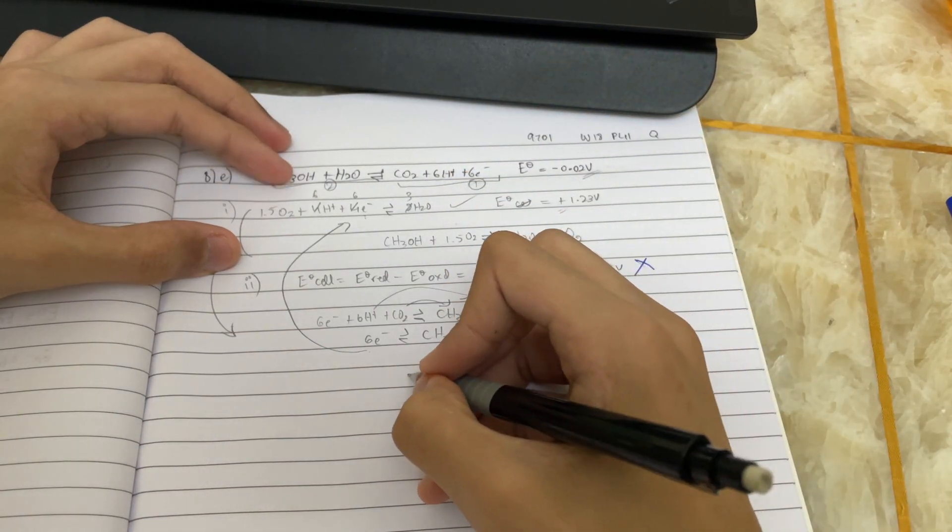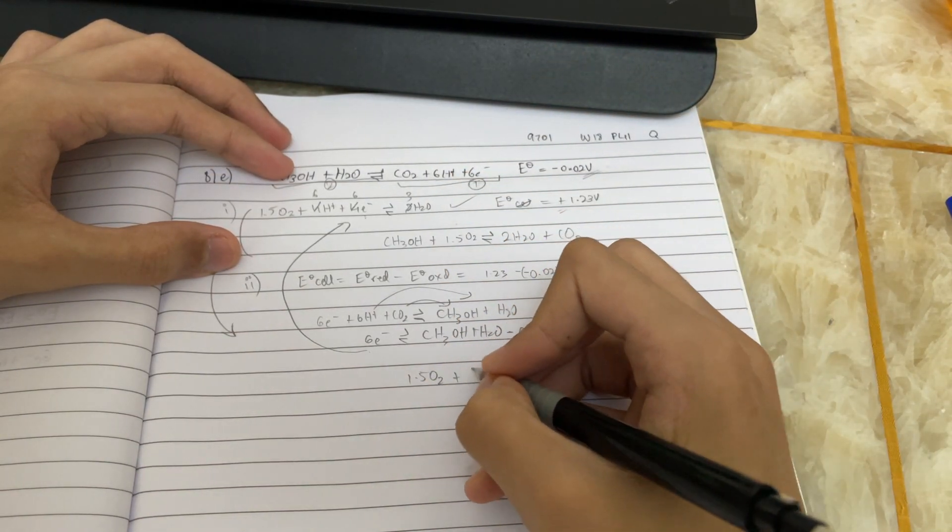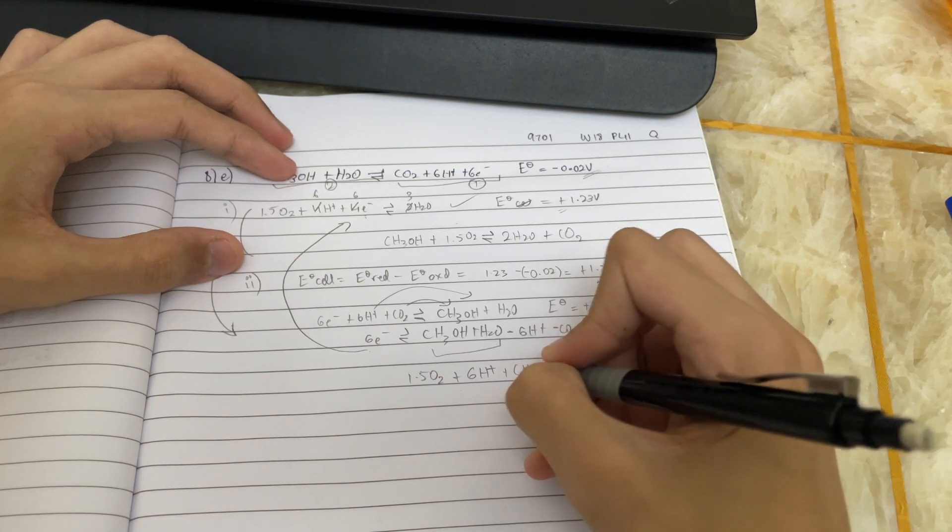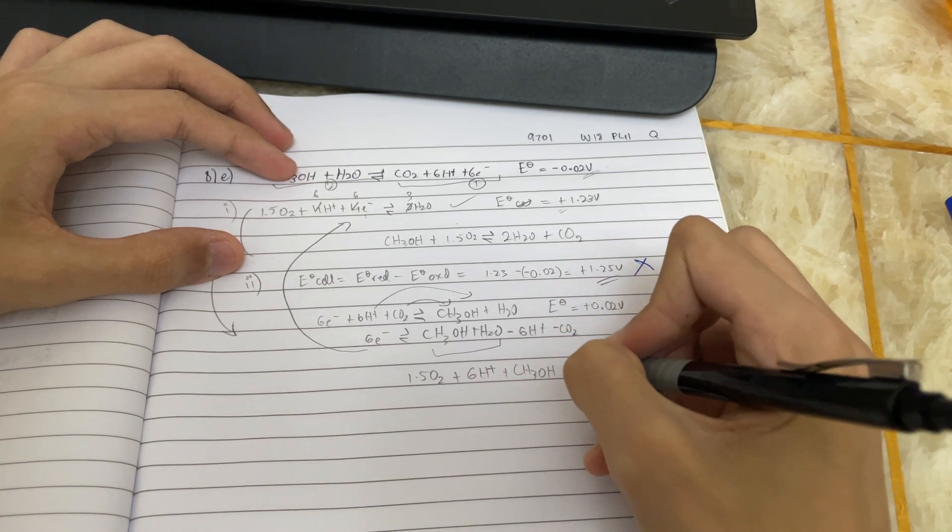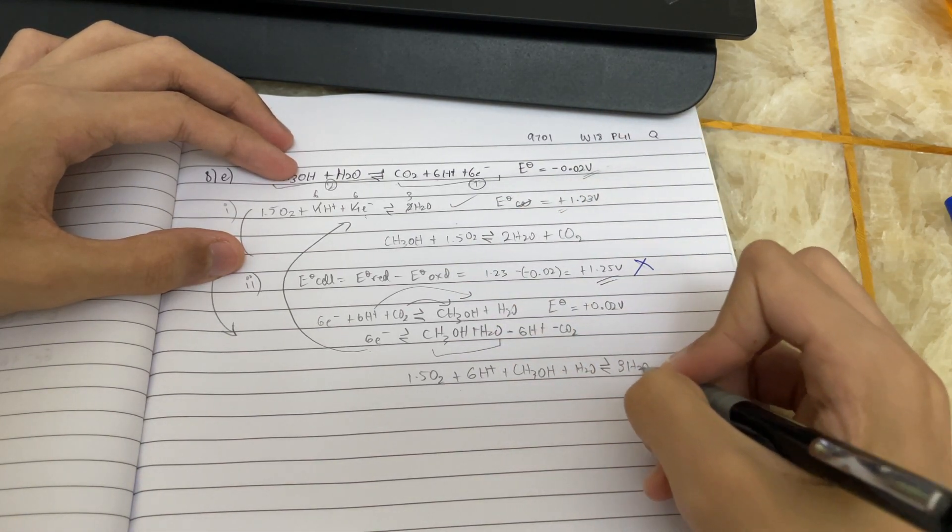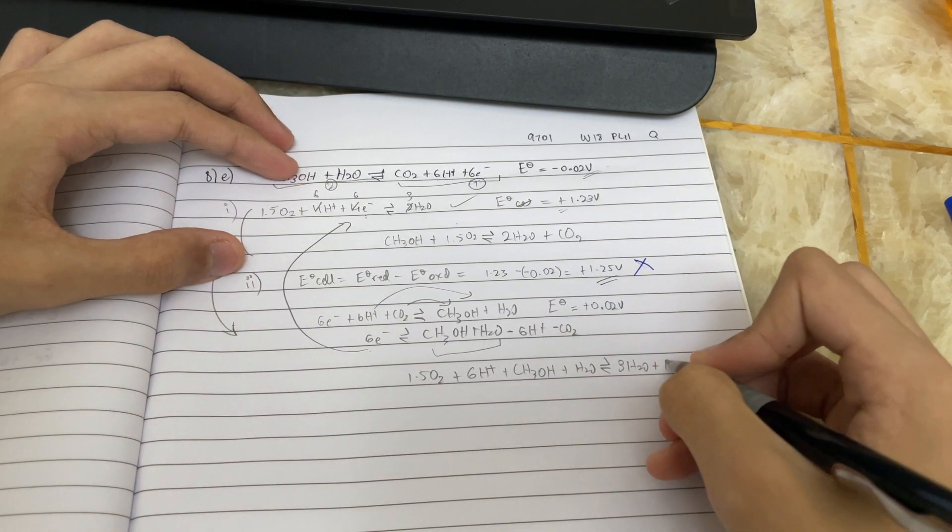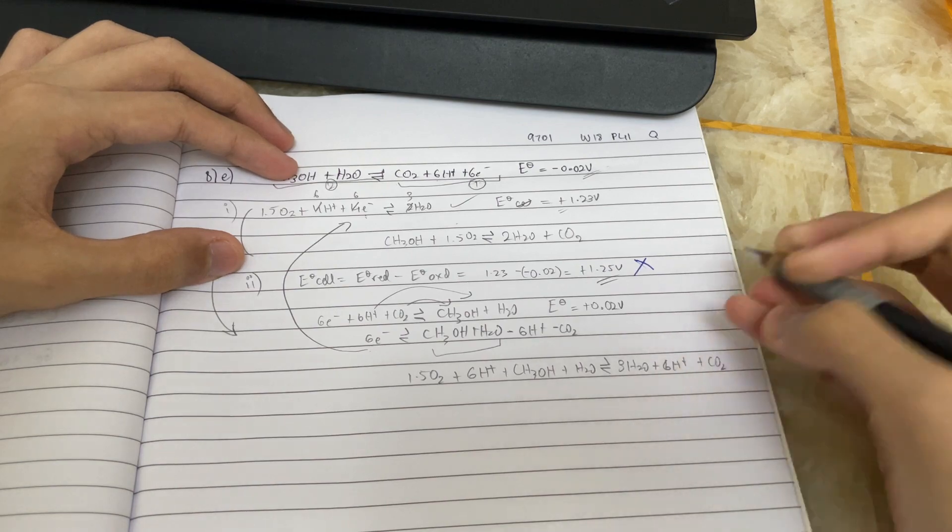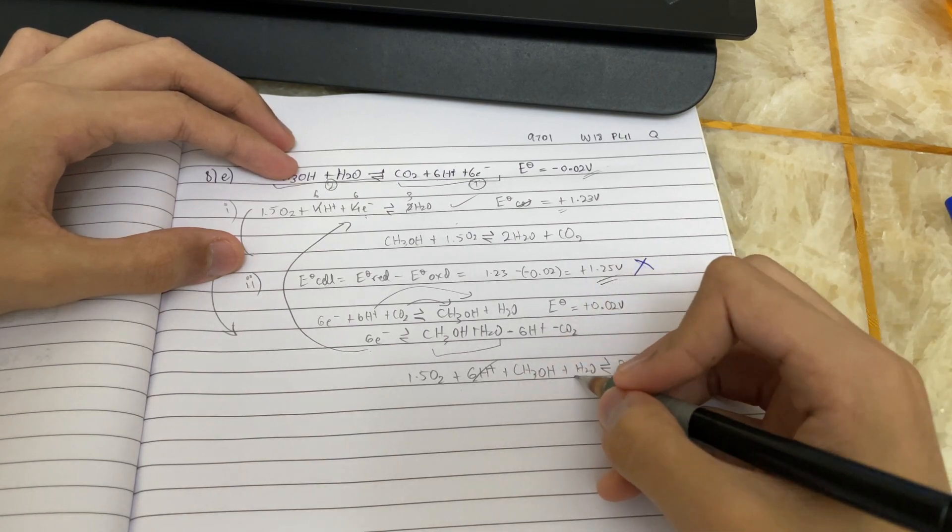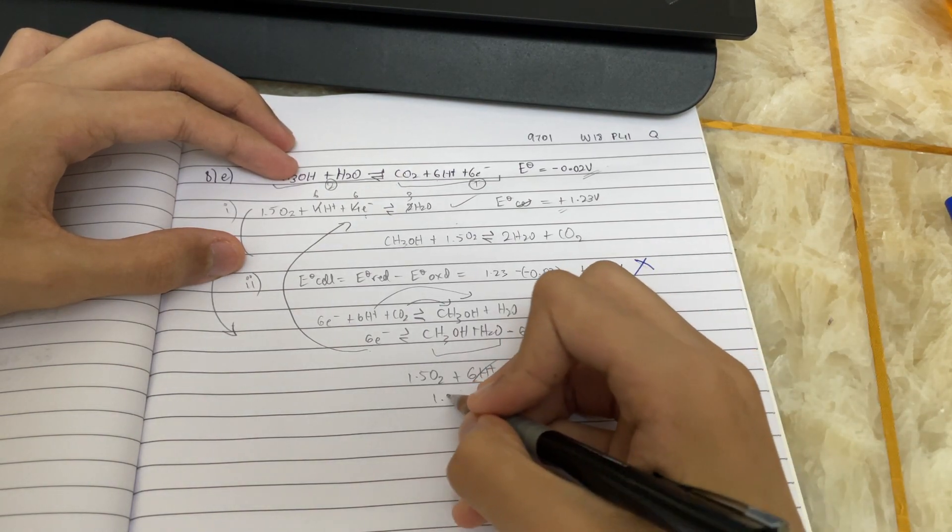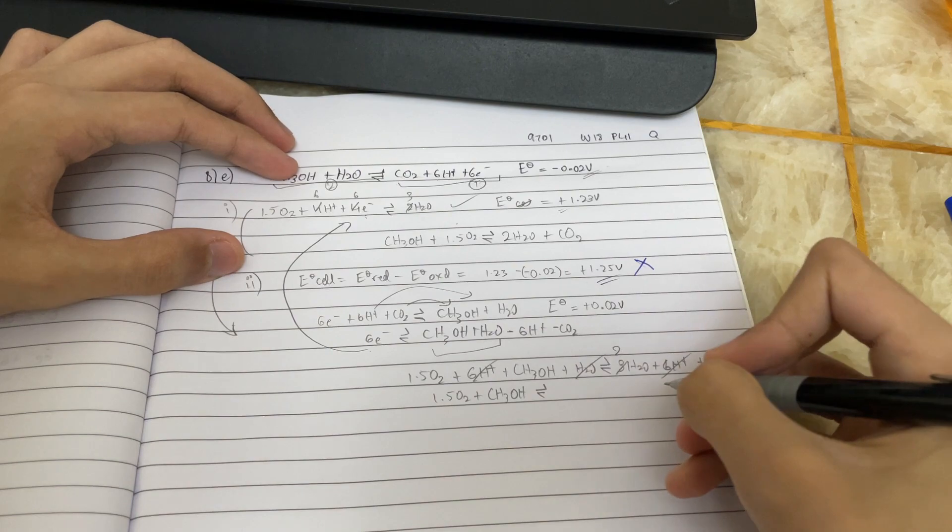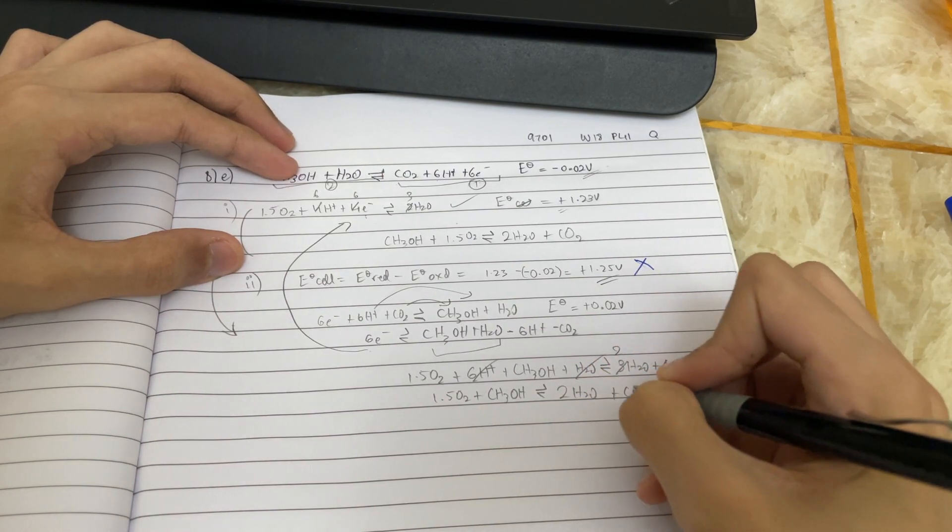And when you plug it in here, you would get 1.5O2 plus 6H+, and whatever is positive would come here, plus CH3OH plus H2O. And whatever is negative would go to the other side. So there's 3H2O already, and whatever is negative, to make it positive, goes to the other side. Plus 6H+ plus CO2. You check out the common terms, you see that H+ and H+ is the same on both sides, so you cancel it out. And there's an H2O here, so this becomes 2. So the final answer would be 1.5O2 plus CH3OH, which would give you 2H2O plus CO2, right?